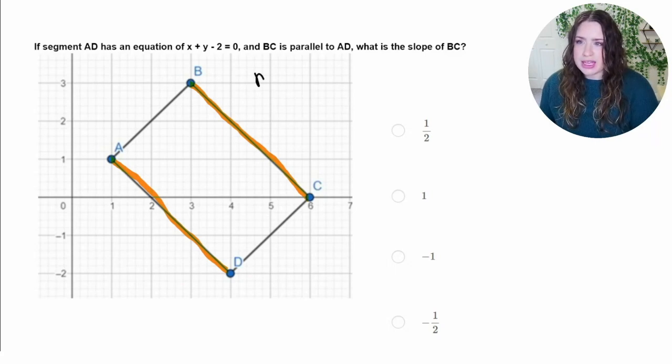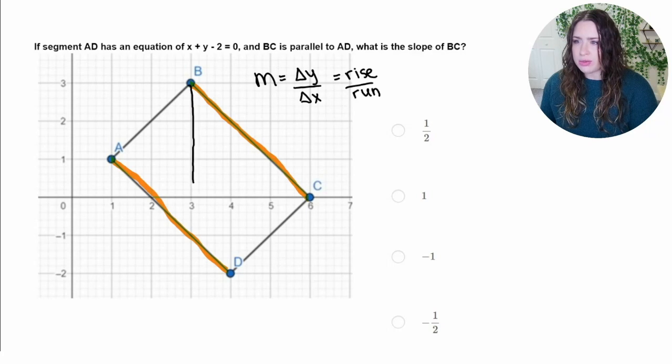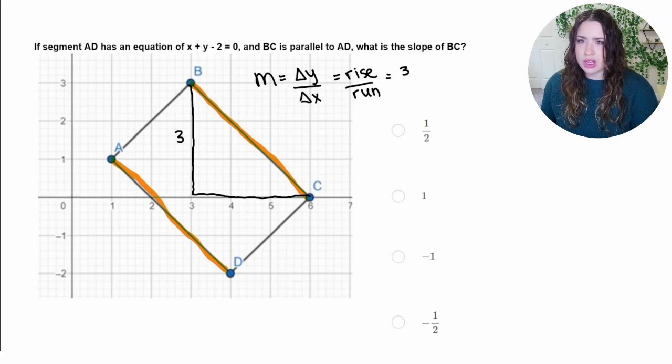So remember that slope is the change in y over the change in x, also sometimes known as rise over run. So if we pick two points, such as B and C, on this graph, and we draw like a little right triangle between them, we can look at the rise and the run. So we're going from 0 up to 3. So that's 3 units for the rise. And technically that's going to be negative 3 because we're going down 3. We can also see that the slope is in a negative direction. And then for our change in x, we can see that that is also 3 units because it's going from 3 to 6. So negative 3 over 3 is going to reduce down to a slope of negative 1. So this is going to be our answer.